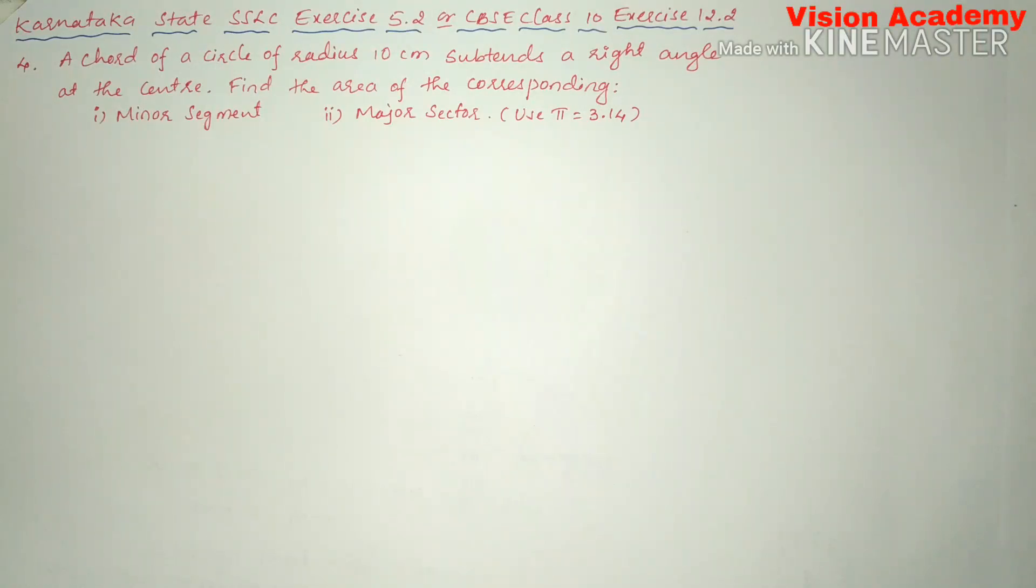In this video, we are going to solve Karnataka state SSLC exercise 5.2 or CBSE class 10 exercise 12.2, question number four. A chord of a circle of radius 10 centimeter subtends a right angle at the center. Find the area of the corresponding minor segment to major segment, use pi equals 3.14.